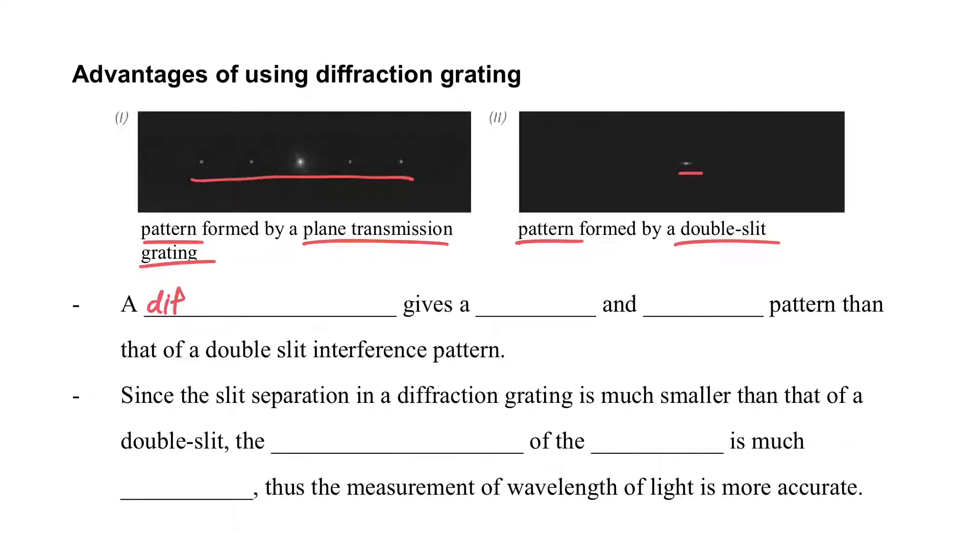You have found that for the double-slit, even though the light is spread out, it just spreads in a very small position. But for the grating, it is widely spread and it can give a much sharper and brighter pattern than the one that we can observe for the double-slit interference pattern.